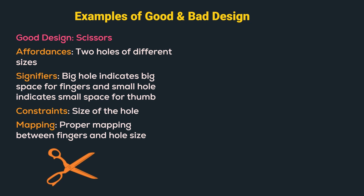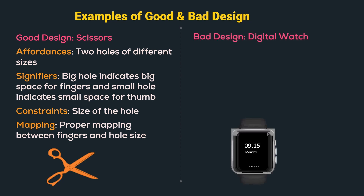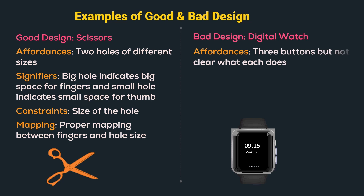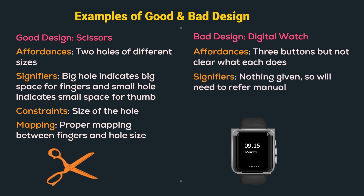Now let us take an example of a bad design: a digital watch with three buttons. The affordances are the three buttons, but we cannot clearly understand what each does. There are no signifiers given, so a person needs to refer to the user manual. There is no clear mapping between the buttons and the functionalities they perform. Thus, a bad design fails to create a good system image, which in turn fails to create a conceptual model about using the device.